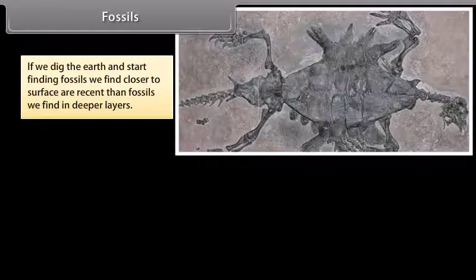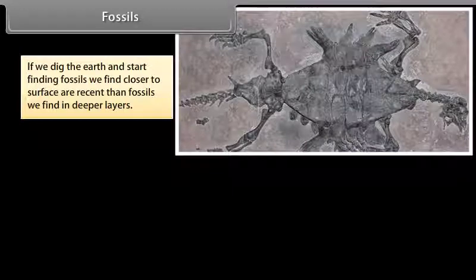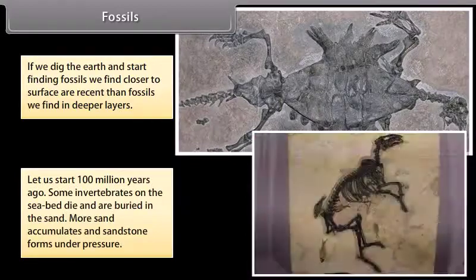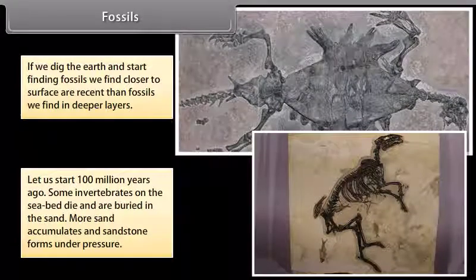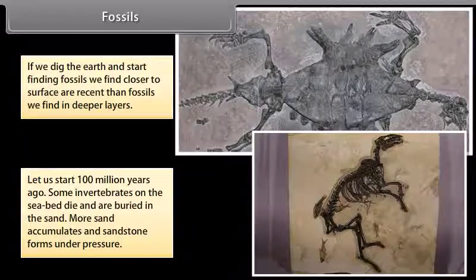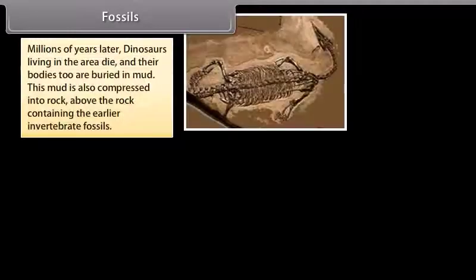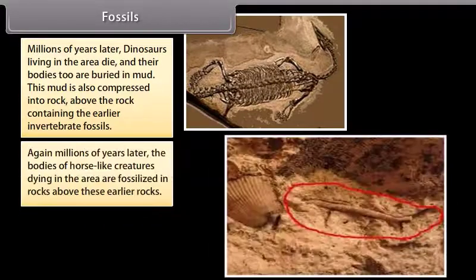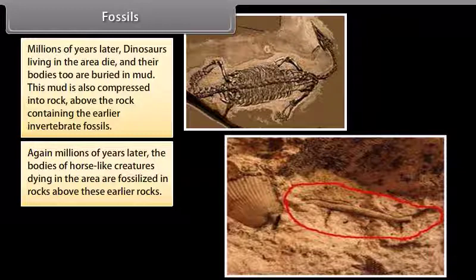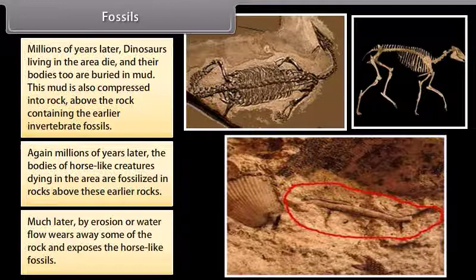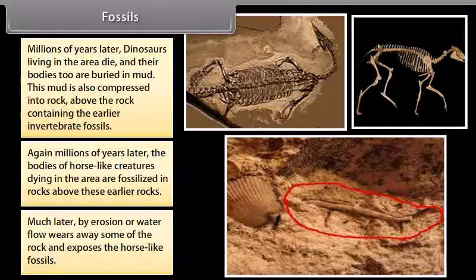If we dig the earth and start finding fossils, we find fossils closer to the surface are more recent than fossils we find in deeper layers. Let us start 100 million years ago. Some invertebrates on the seabed die and are buried in the sand. More sand accumulates and sandstone forms under pressure. Millions of years later, dinosaurs living in the area die and their bodies too are buried in mud. This mud is also compressed into rock above the rock containing the earlier invertebrate fossils. Again, millions of years later, the bodies of horse-like creatures dying in the area are fossilized in rocks above these earlier rocks. Much later, erosion or water flow wears away some of the rock and exposes the horse-like fossils.